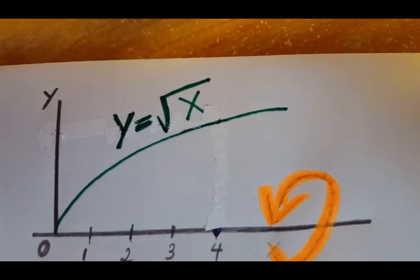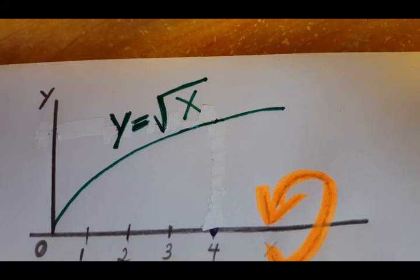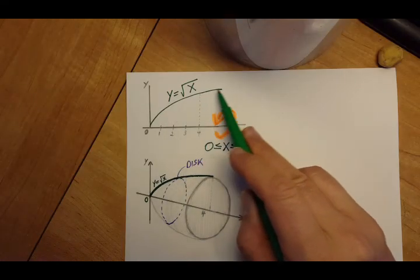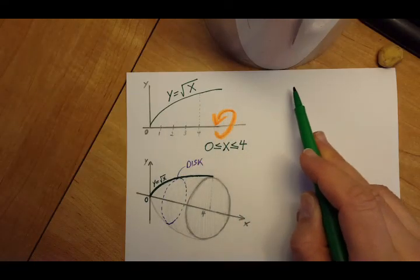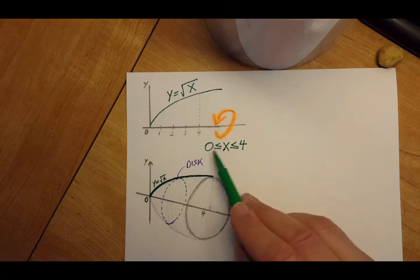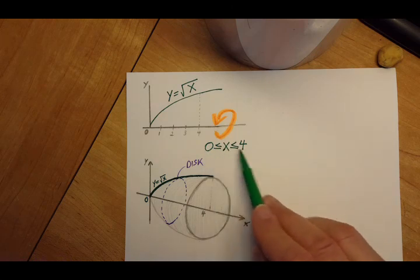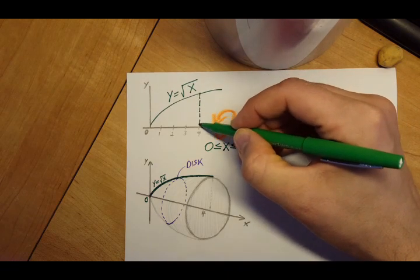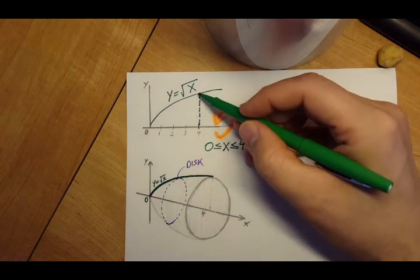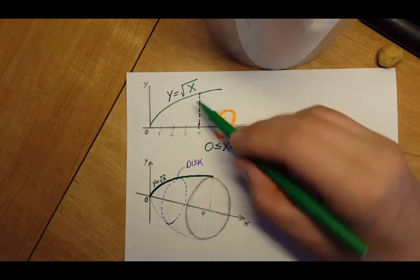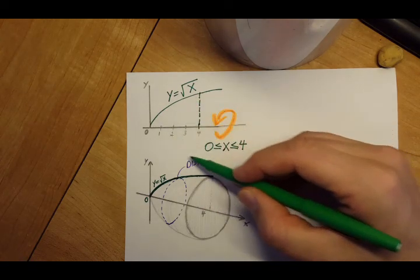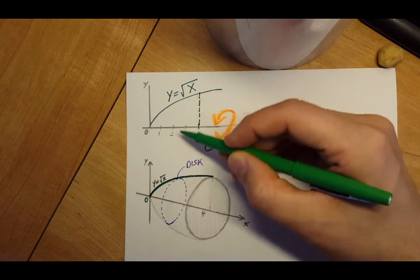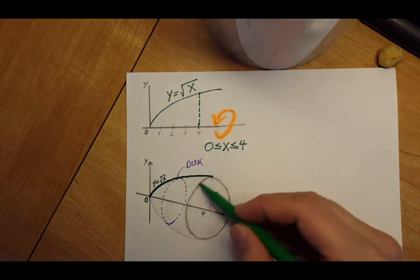If we take a look at our function y equals the square root of x, this would just keep going, but the problem tells us that we are interested only in x from 0 to 4, so we simply cut it off right here. This section we don't care about, so what we have here is what we're gonna turn around the x-axis.